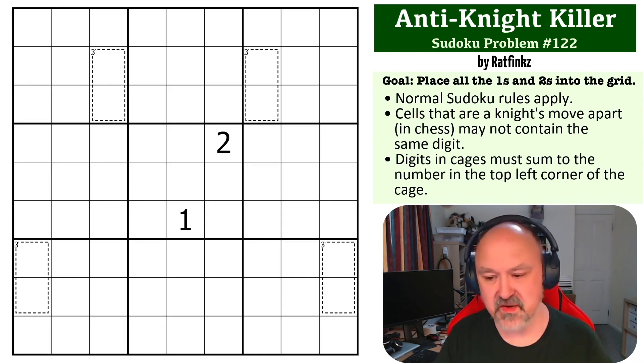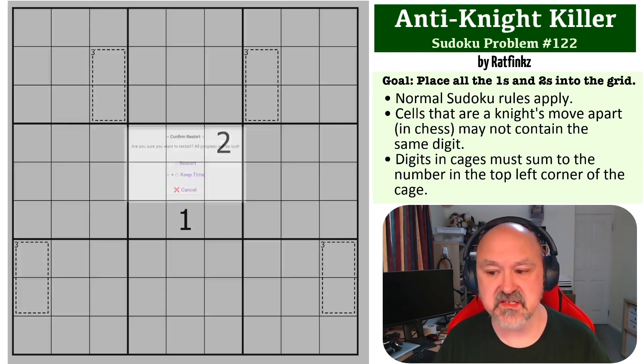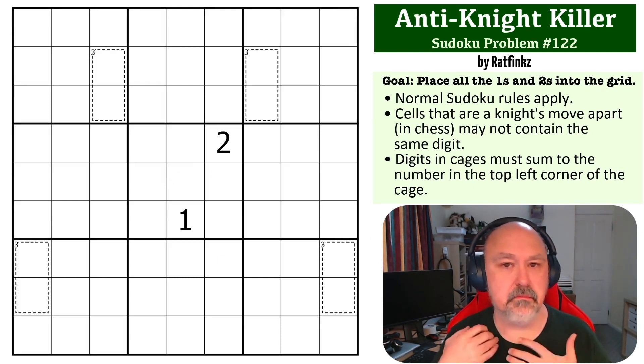And digits in cages must sum to the number in the top left corner of the cage. Place all of the ones and twos, that's what you need to do. I'm going to wait for a few seconds so you can give this one a try for yourself, and then I'll be back to explain how this one works.